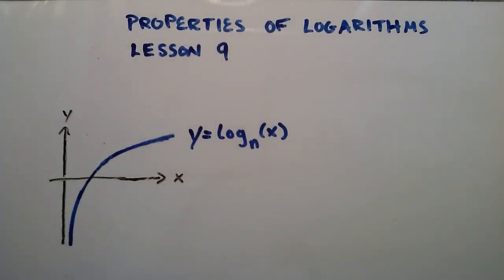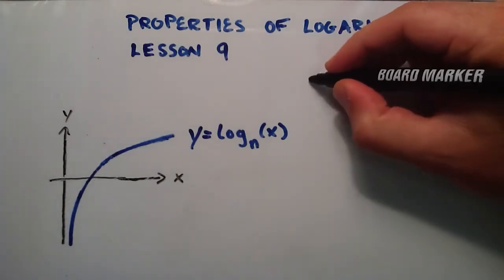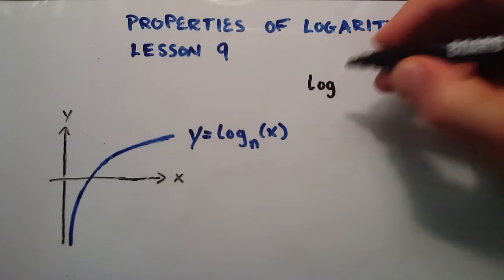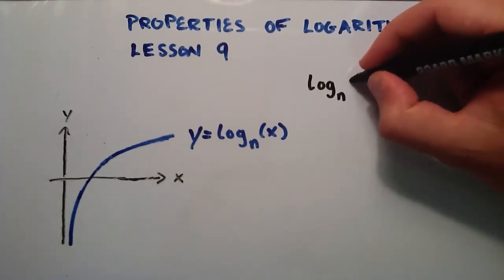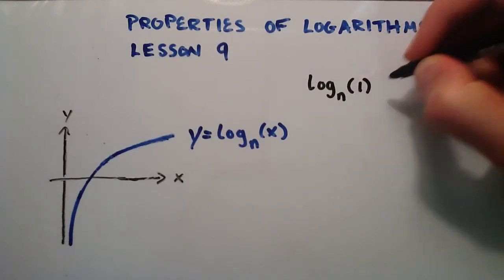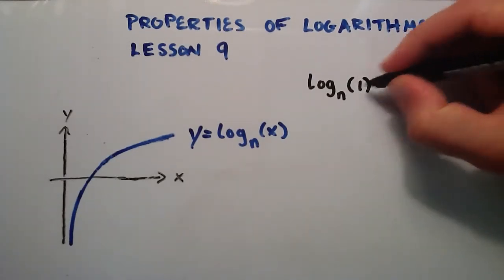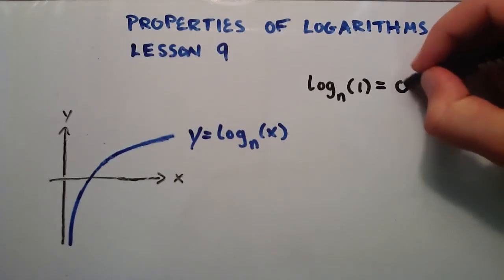Hey everybody, this is Paul. Today I'm going to be showing you another important yet simple property of logarithms. And so that property looks like this. If you have a logarithm of any base n, so n can be any number you want it to be, and the argument of the logarithm is equal to 1, then our logarithm is simply equal to 0.